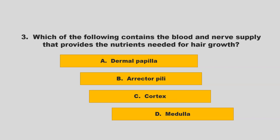Which of the following contains the blood and nerve supply that provides the nutrients needed for hair growth? Is it dermal papilla, erector pili, cortex, or medulla? If you chose A, dermal papilla, you are correct.